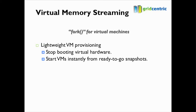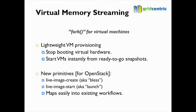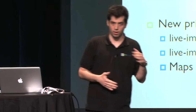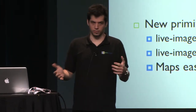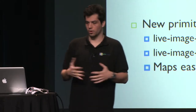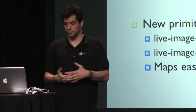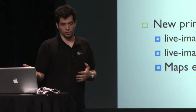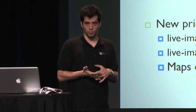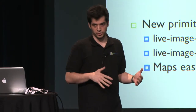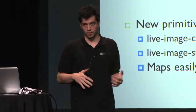You don't do any booting. Virtual machines come up faster and use way less resources, limited to exactly what they need in terms of memory and disk. For OpenStack, our product introduces a couple of new primitives. We extend the Nova API with new actions on server objects: live image create — also called bless — where you create the snapshot, and live image start — also called launch. Instead of booting new instances, you're launching new instances from a snapshot you've set up previously.